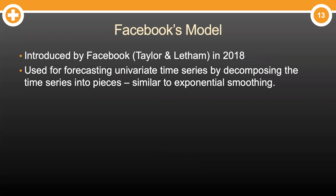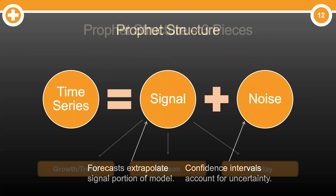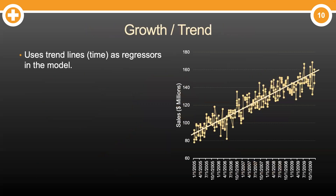Let's take a look at what this algorithm does under the hood. The Prophet algorithm is used for forecasting univariate, or single, time series by basically breaking it down into pieces — similar to what we learned with exponential smoothing. Just like with any time series, the goal of Prophet is to tease out the signal in a dataset and forecast that signal into the future. For Prophet, that signal is broken down into three pieces: growth or trend, season, and holiday.